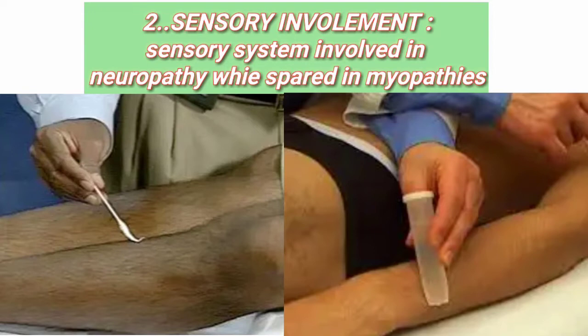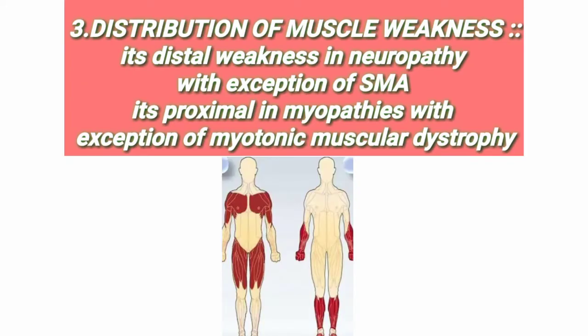The second point is sensory involvement. Sensory involvement is typical for neuropathies, while there is no sensory involvement in myopathies. Third is distribution of muscle weakness — as shown in the picture below, myopathies involve proximal muscles while neuropathies involve distal muscles.